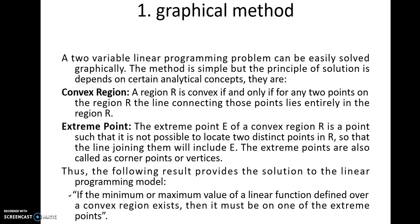Second is extreme point. Extreme meaning the corner points. These are also known as corner points or vertices. The extreme point E of a convex region R is a point such that it is not possible to locate two distinct points in R so that the line joining them will include E. Hence, the following result provides the solution to the LPP model. If the minimum or maximum value of a linear function defined over a convex region exists, then it must be on one of the extreme points.